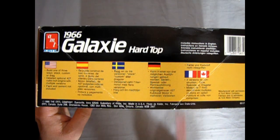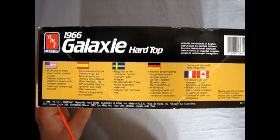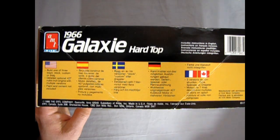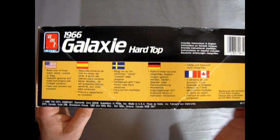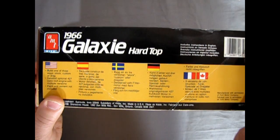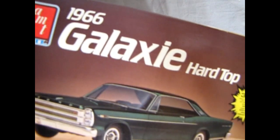Let's see, is there a date on this thing? 1986, the AMT Ertl Company. So, of course, this is an old one. This includes instructions in English. And it has a barcode. This barcode was kind of new back then.